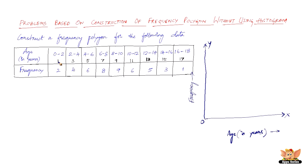We need to write the midpoints 1 to 17 on the x-axis: 1, 3, 5, 7, 9, 11, 13, 15, and 17. We also need another point at 19, and since we start with 1 we need another class interval on the negative side, so let us take minus 1. So the x-axis goes: minus 1, 1, 3, 5, 7, 9, 11, 13, 15, 17, and 19. On the y-axis we have the frequency: 2, 4, 6, and so on.